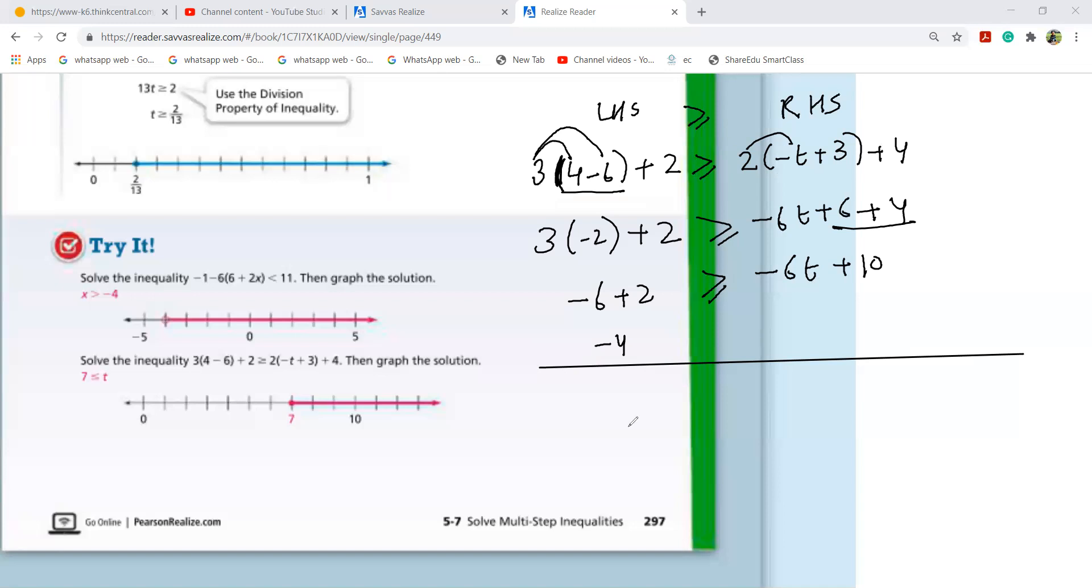Now, I got minus four minus 6T plus 10. Okay. This time, 10 goes to other side. Minus four minus 10. 10 goes to other side. It becomes minus. So, this is minus 14. Same sign. Now, girls. This minus six. It's multiplication. It comes down and becomes division. Minus 14 over minus six. When minus comes to the other side with multiplication, it changes the.